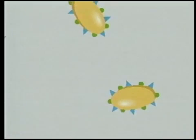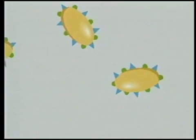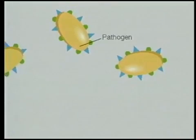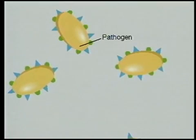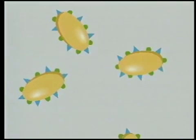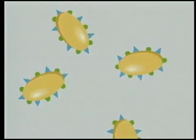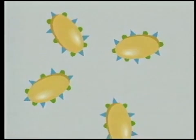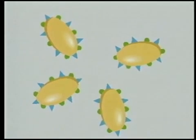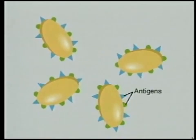A virus or organism that causes an infectious disease is called a pathogen. The body's immune system recognizes a pathogen as foreign because of molecules on the pathogen's surface. These molecules are called antigens.